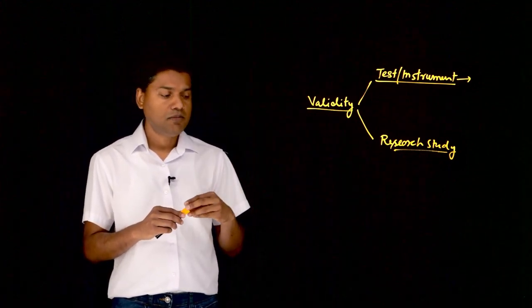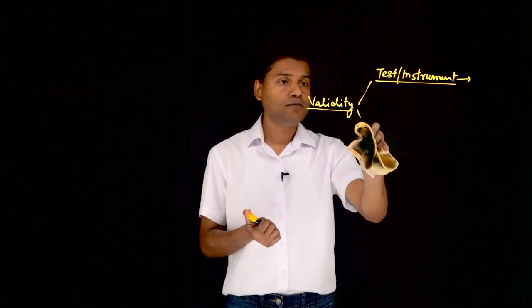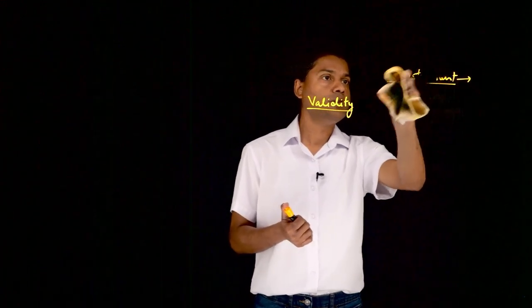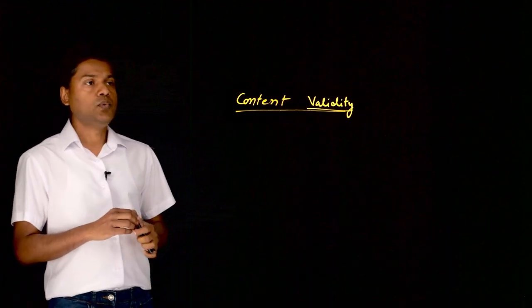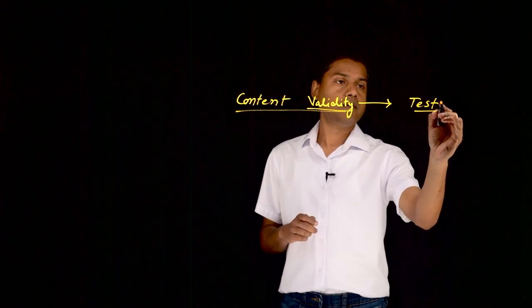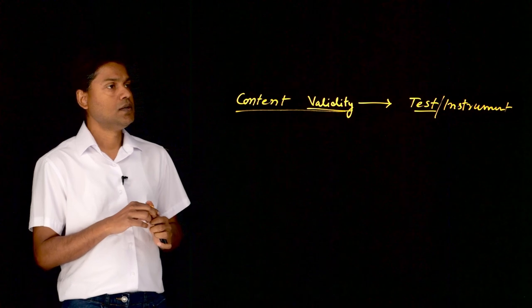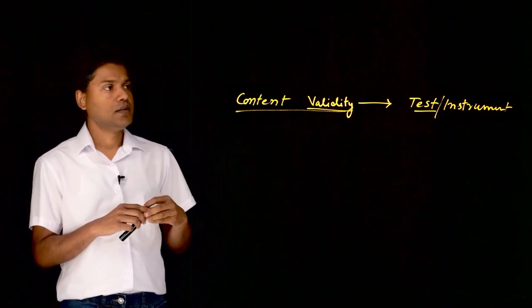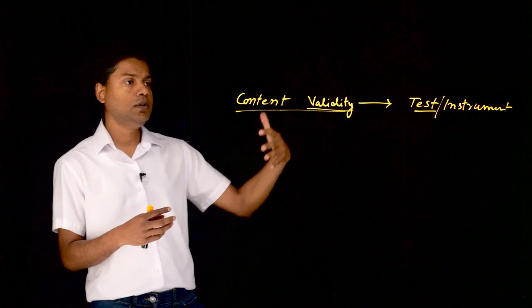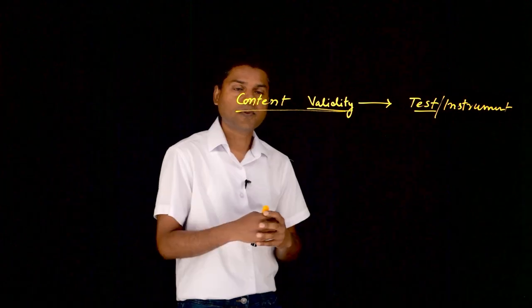So let's learn about the different kinds of validity used in research. There are multiple types of validities. In this video, I'm going to talk about a validity called content validity. As the word itself suggests — content. So when you think about a test or instrument, content validity refers to the extent to which the content of an instrument is representative of all the components inherent in that construct.